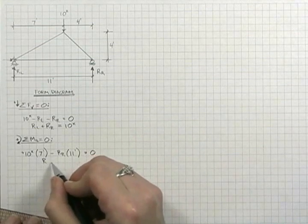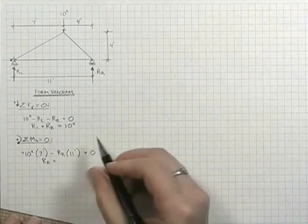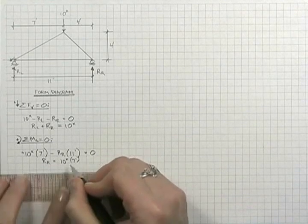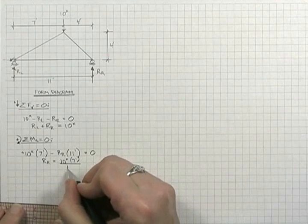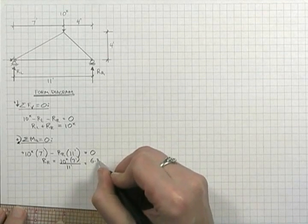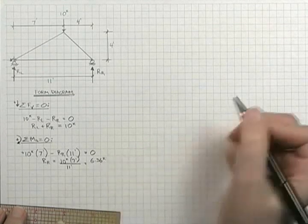Giving us a direct solution for r right is equal to ten kips times seven feet divided by eleven feet equals six point three six kips.